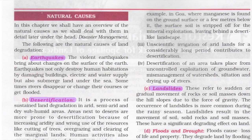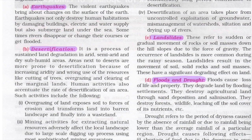Earthquakes are violent natural events that bring change to the surface of the earth, disturbing the landscape and pattern of the earth. Earthquake damage includes destruction of buildings, electric and water supply, and can submerge land under the sea. Sometimes rivers disappear, change their courses, or get flooded because of earthquakes.